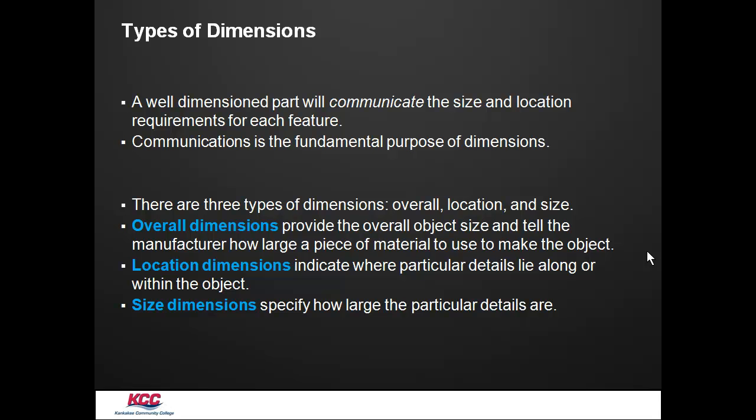Types of dimensioning. The best way to do dimensioning is to classify the three types of dimensions: their overall dimensions, their location and size. The overall tells the manufacturer how big the object is in its blank size, in its stock size. Then the location indicates where the details lie within that object. And then the size dimensions, how big that particular detail or feature is.